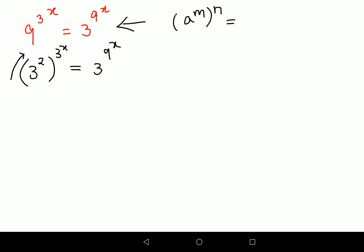So I can write this as 3 raised to 2 times 3 raised to x equals 3 raised to 9 raised to x.